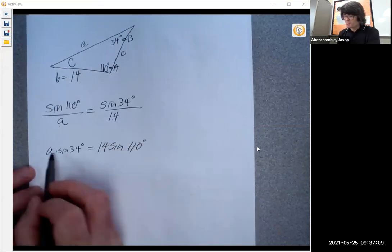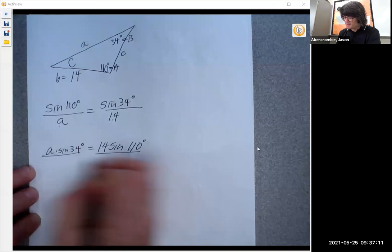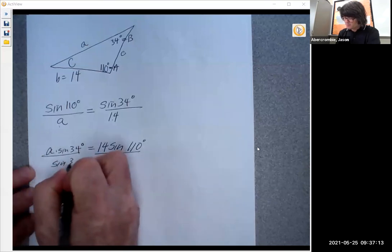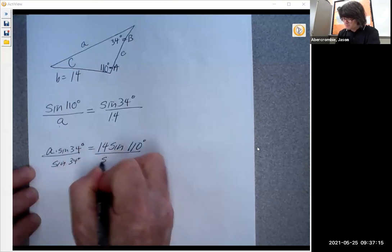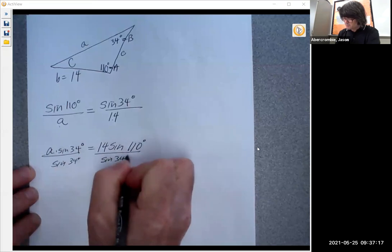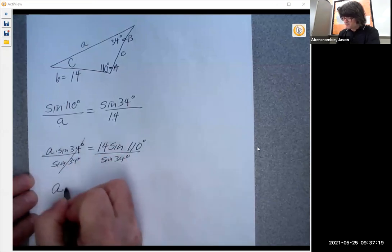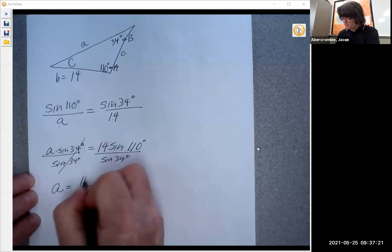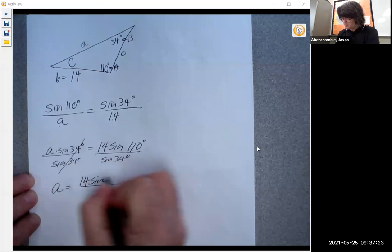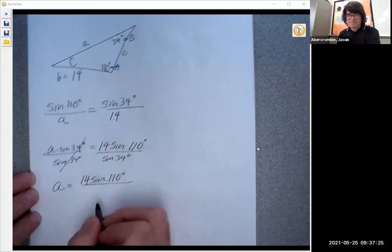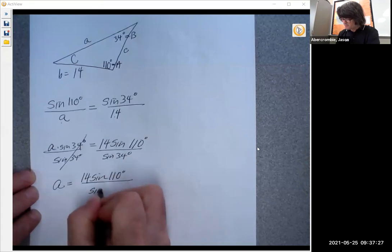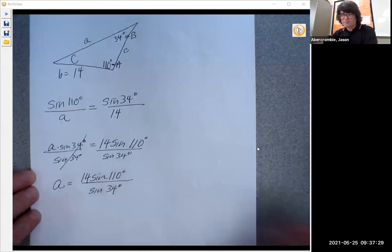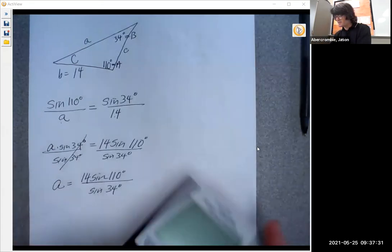We're going to solve for a by dividing by sine 34. And a is 14 sine 110 over sine 34. And we're going to use my calculator to see what that is.